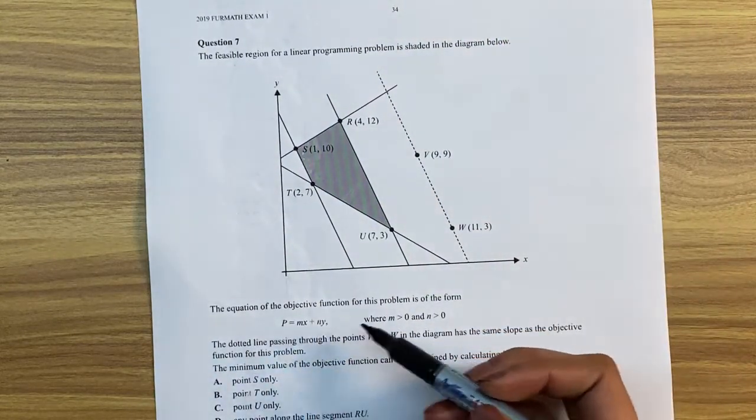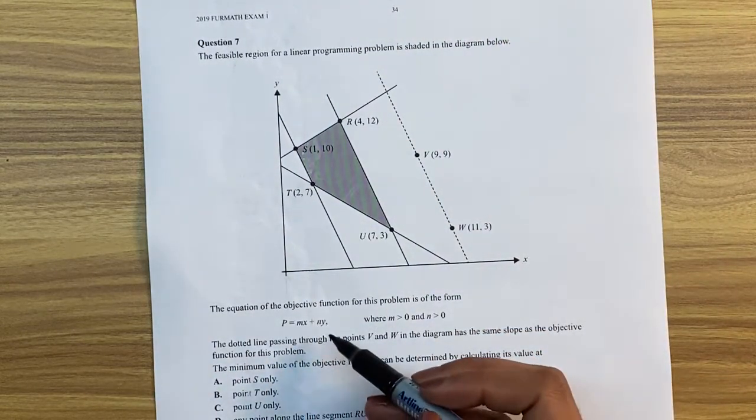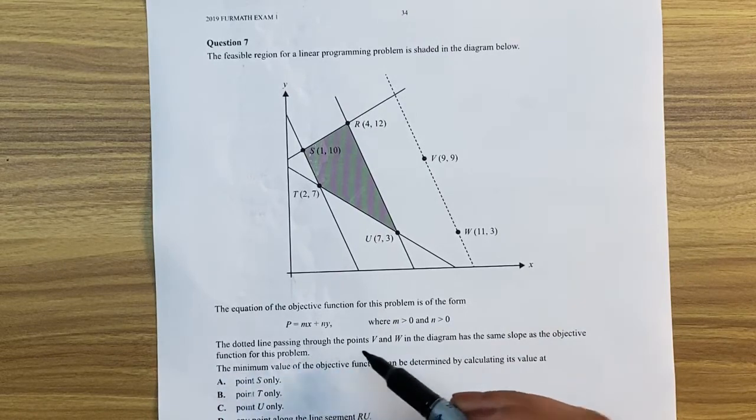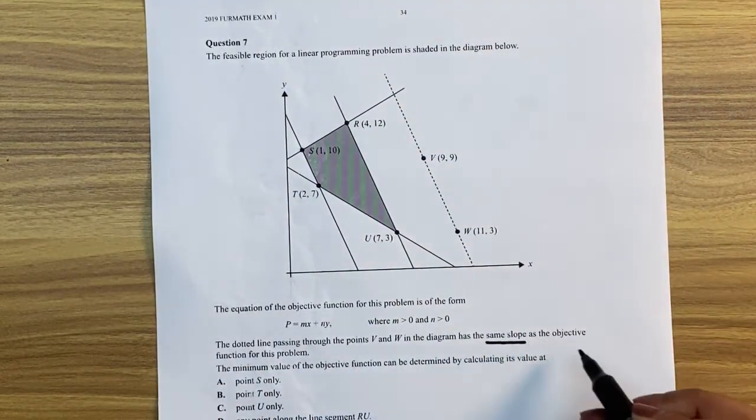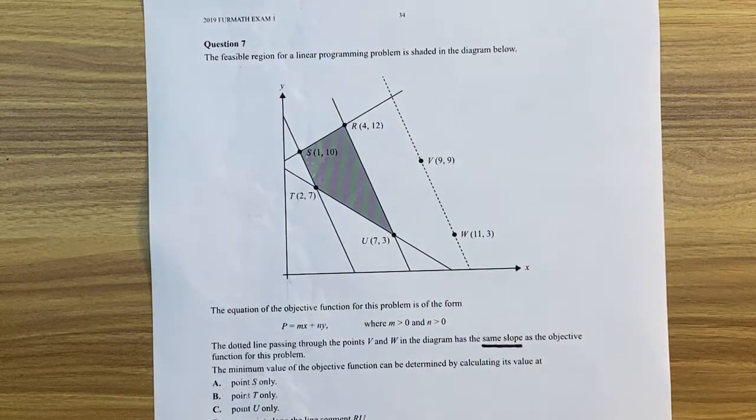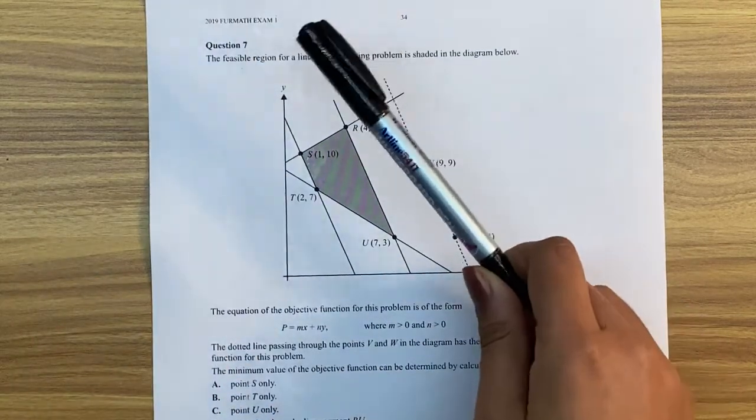Alright, the equation of the objective function for this problem is in the form this. The dotted line passing through the point, so this dotted line here, has the same slope as the objective function. Now remember, the objective function is the function that makes up a sliding line.